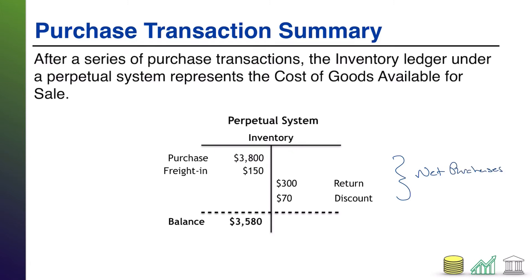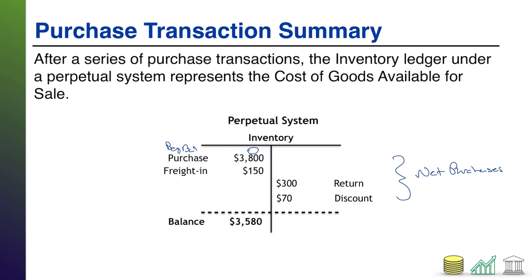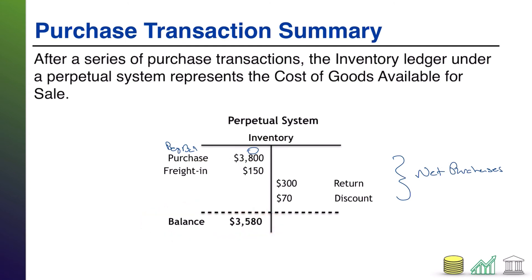When you combine your net purchases with your beginning balance of inventory — and notice in this example I didn't have a beginning balance, but I could just write in beginning balance zero — when you combine your net purchases with your beginning balance of inventory, what that then tells you is what you have available for sale to any given customer.